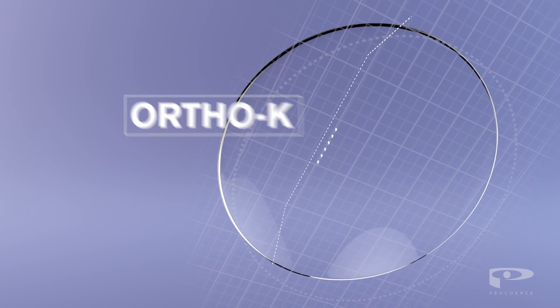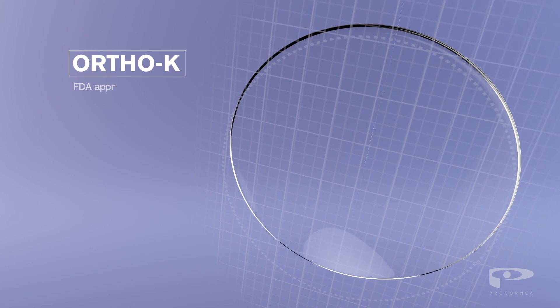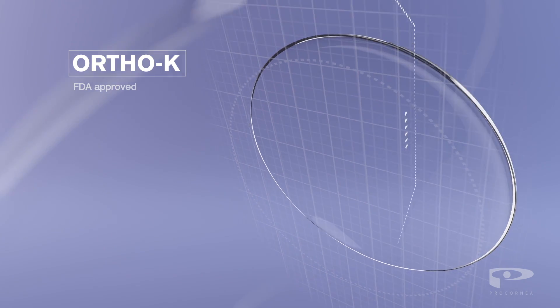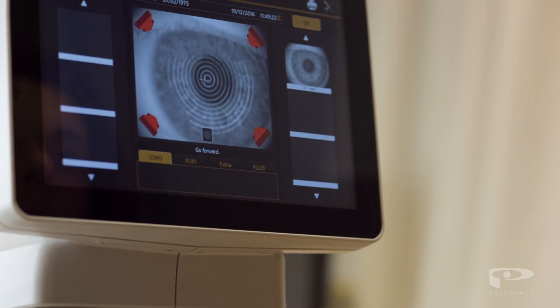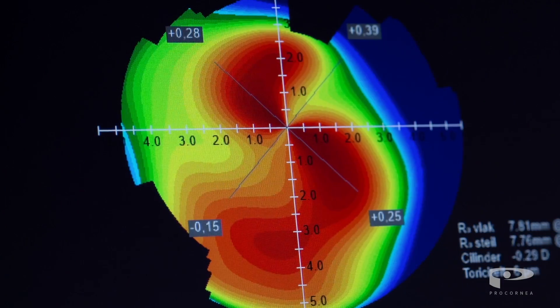Orthokeratology, or Ortho-K, is a revolutionary FDA-approved technique that also changes the shape of the cornea. It is a non-surgical procedure that is completely reversible and extremely safe, and avoids complications such as dryness.